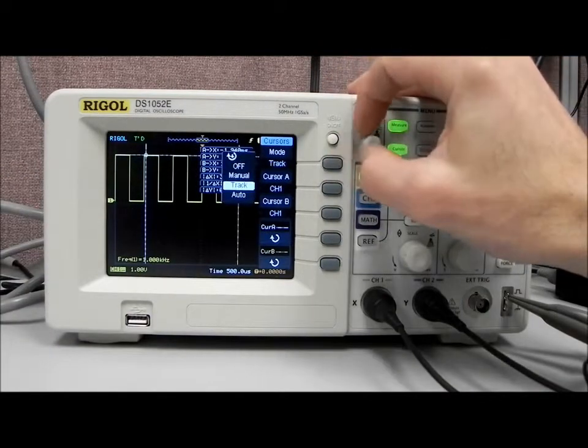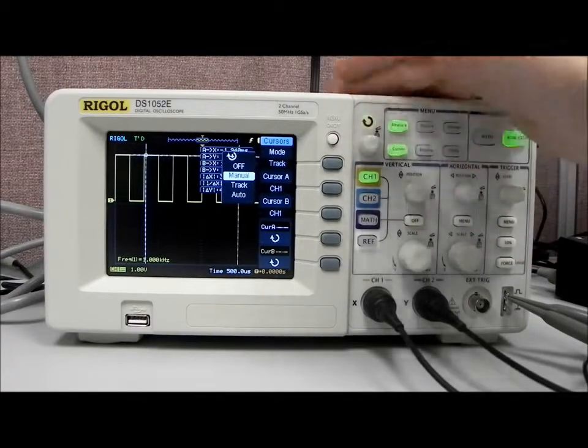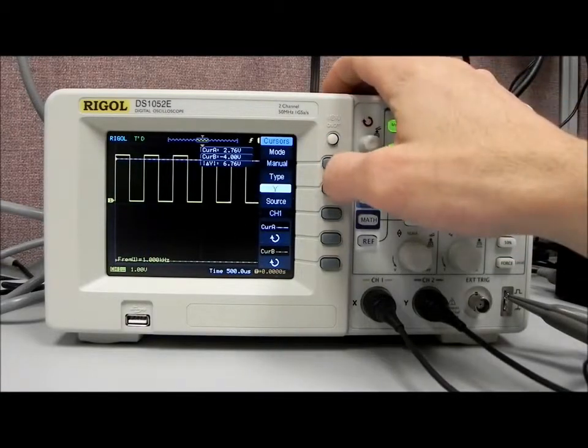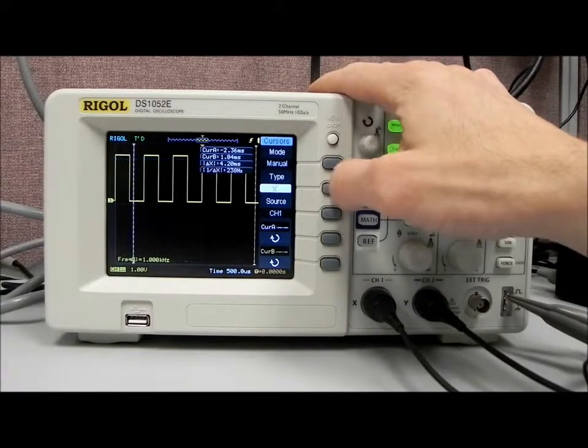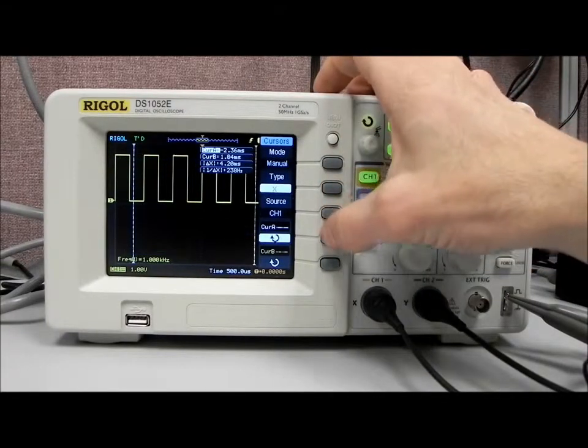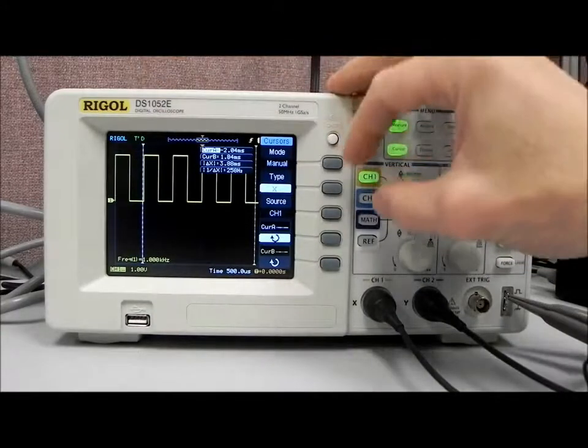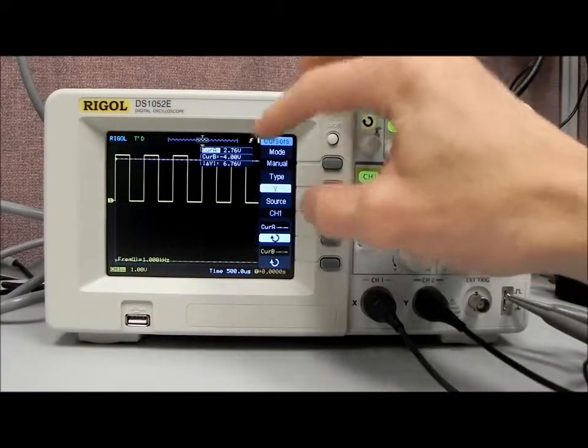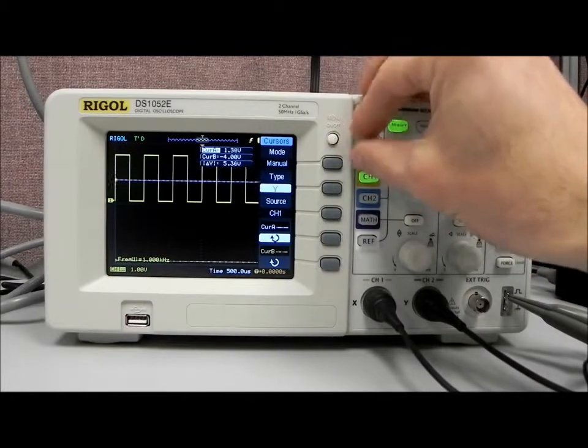If we wanted to do something a little more manual, we can go to the manual mode. And the manual mode is going to allow us to select either Y or the X axis. And you can see they changed. Let's select A. So we can move cursor A in the X. We can move cursor A in the Y. You can see that.